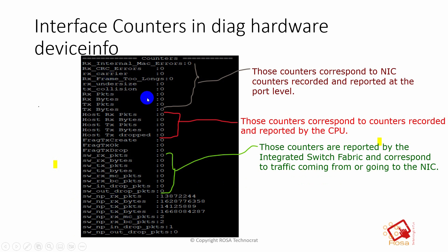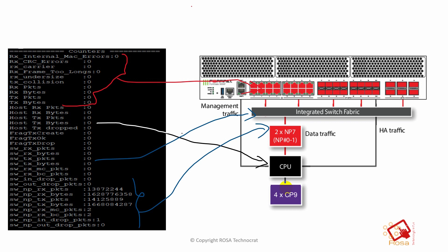Using 'diag hardware device info nick,' you can determine exactly where packets are being dropped and dig into the actual root cause. Correlating with the FortiGate architecture diagram: the first (red) counters represent drops at the interface itself. From the interface, traffic moves to the integrated switch fabric — when packets are dropped there, the switch RX and switch TX counters (shown in blue) increase.